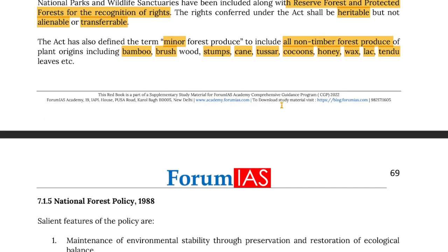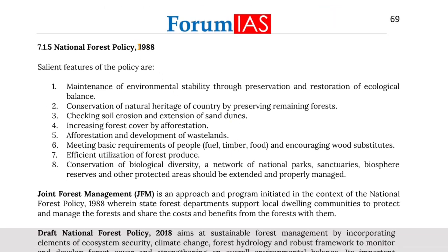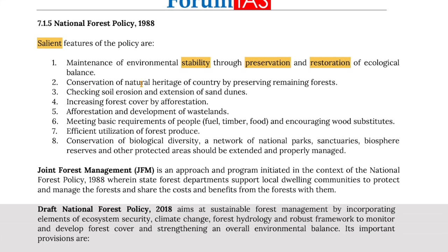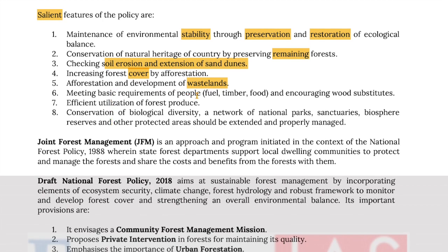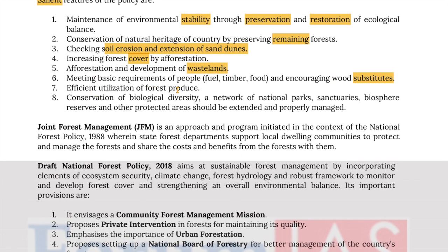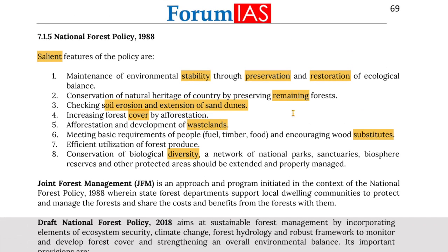The National Forest Policy of 1988 has the following salient features: maintenance of environmental stability through preservation, restoration and ecological balance; conservation of national heritage by preserving remaining forests; checking soil erosion and extension of sand dunes; increasing forest cover by afforestation and development of wastelands; meeting basic requirements of people including fuel, timber, food and encouraging wood substitutes; efficient utilization of forest produce; conservation of biological diversity; and a network of national parks, biosphere reserves and other protected areas should be extended and properly managed.